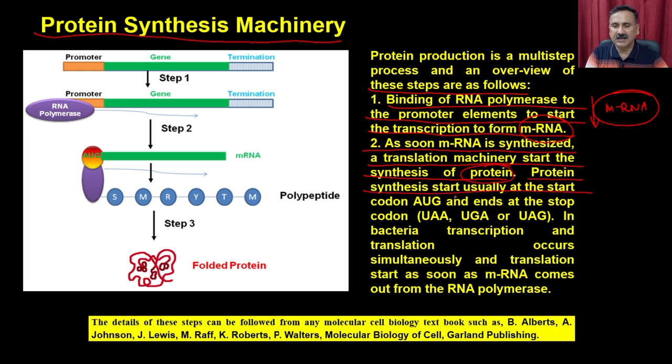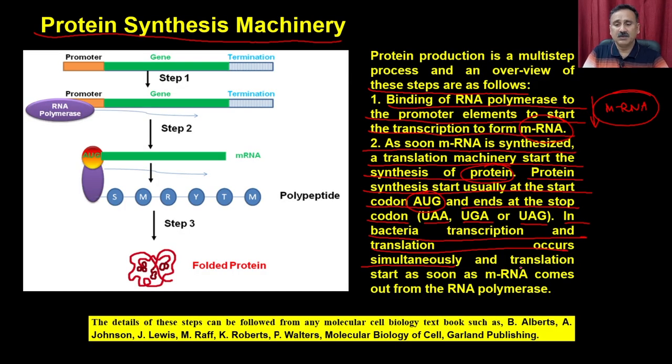As soon as the messenger RNA is synthesized, the translational machinery starts the synthesis of the protein or enzyme. Protein synthesis starts at a start codon AUG and ends at stop codons UAA, UGA, or UAG. In bacteria, transcription and translation occur simultaneously because there is no nucleus. In the eukaryotic system, transcription occurs inside the nucleus and translation occurs outside in the cytosol, so they are not coupled.